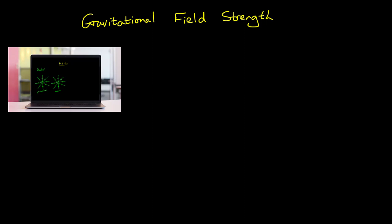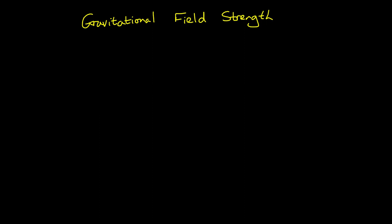What is gravitational field strength and how can we calculate it? Gravitational field strength at a point in space is simply the force exerted per unit mass placed at that point. In other words, it represents the force that a 1 kg mass would experience at a given location in a gravitational field.